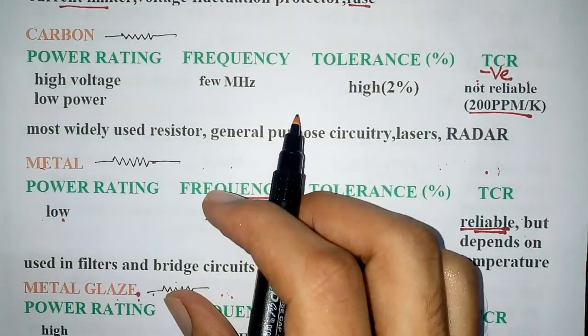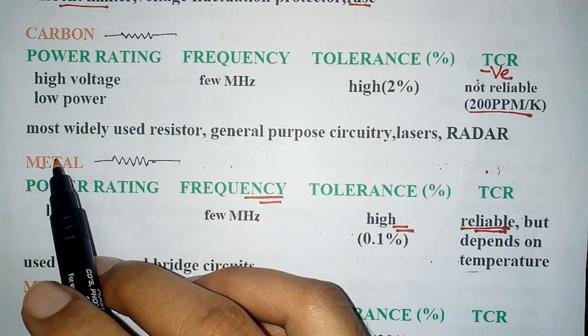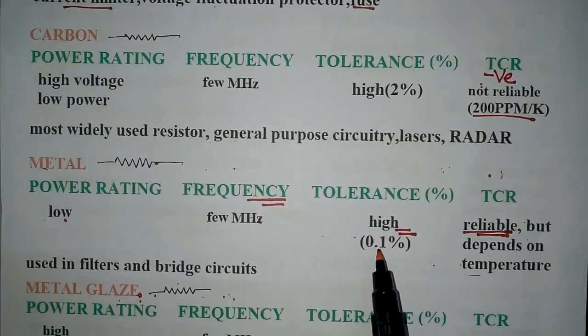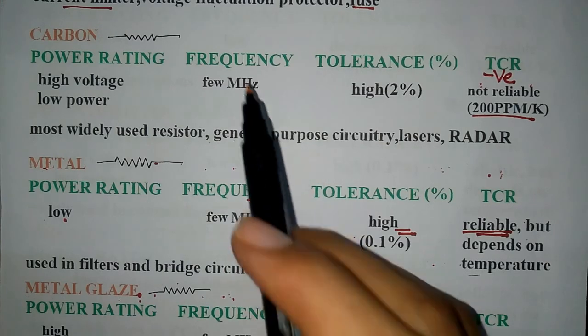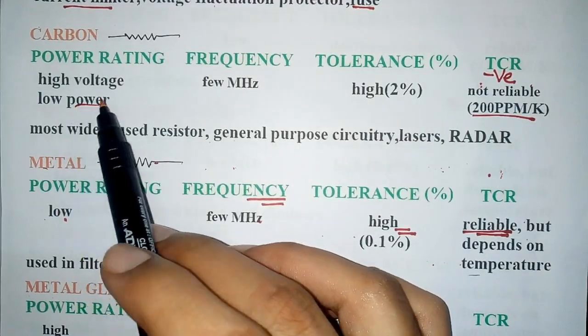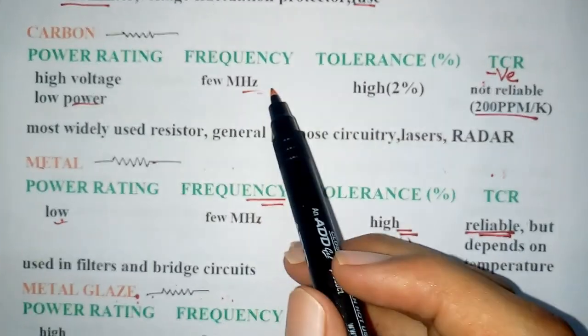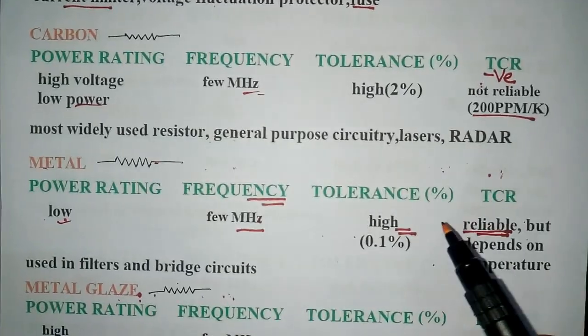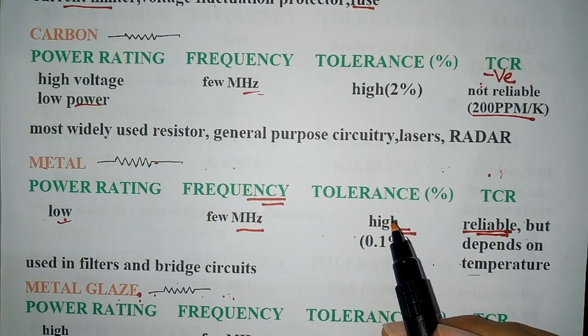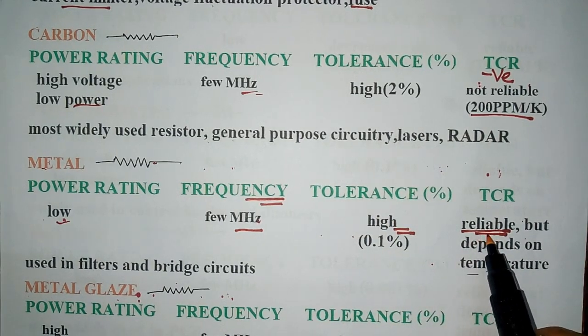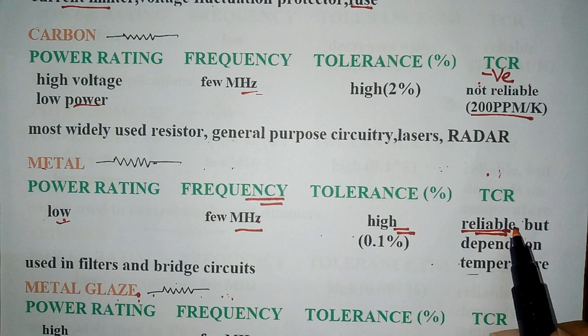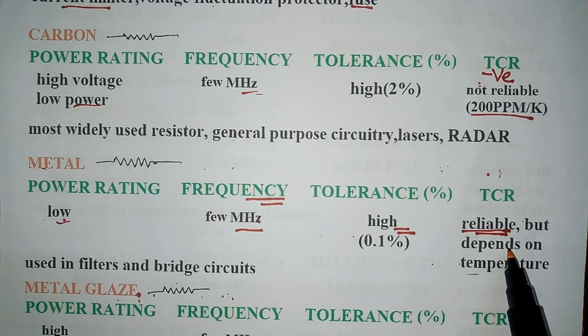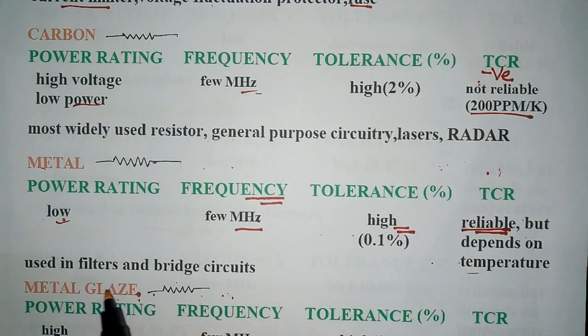Next is metal resistor. It is similar to carbon resistor but with higher tolerance and similar properties like low power, good frequency stability, and a bit reliable TCR value. But it depends on temperature. It is generally used in filters and bridge circuits.